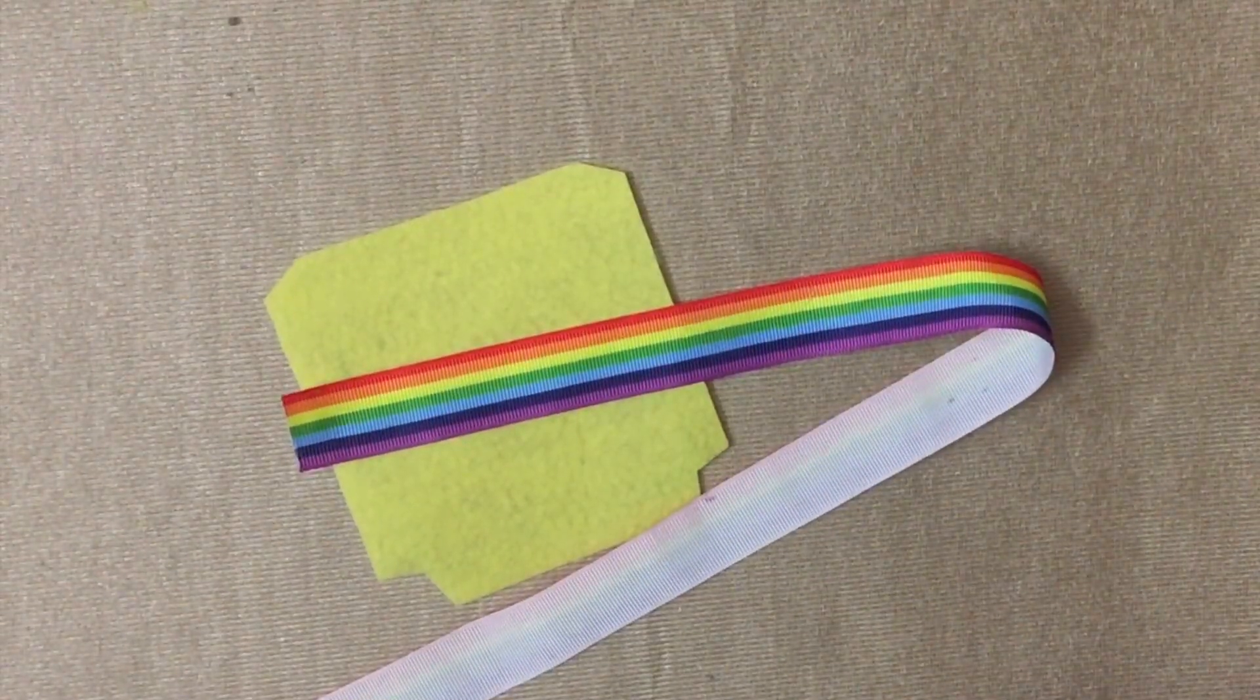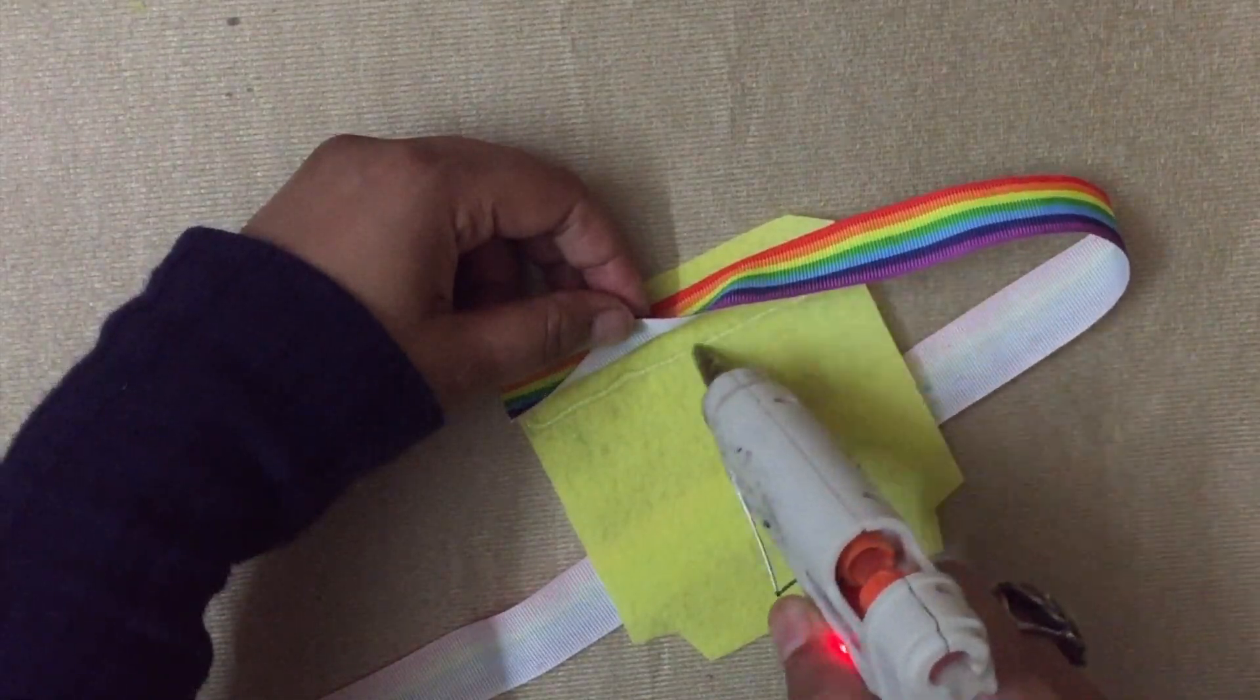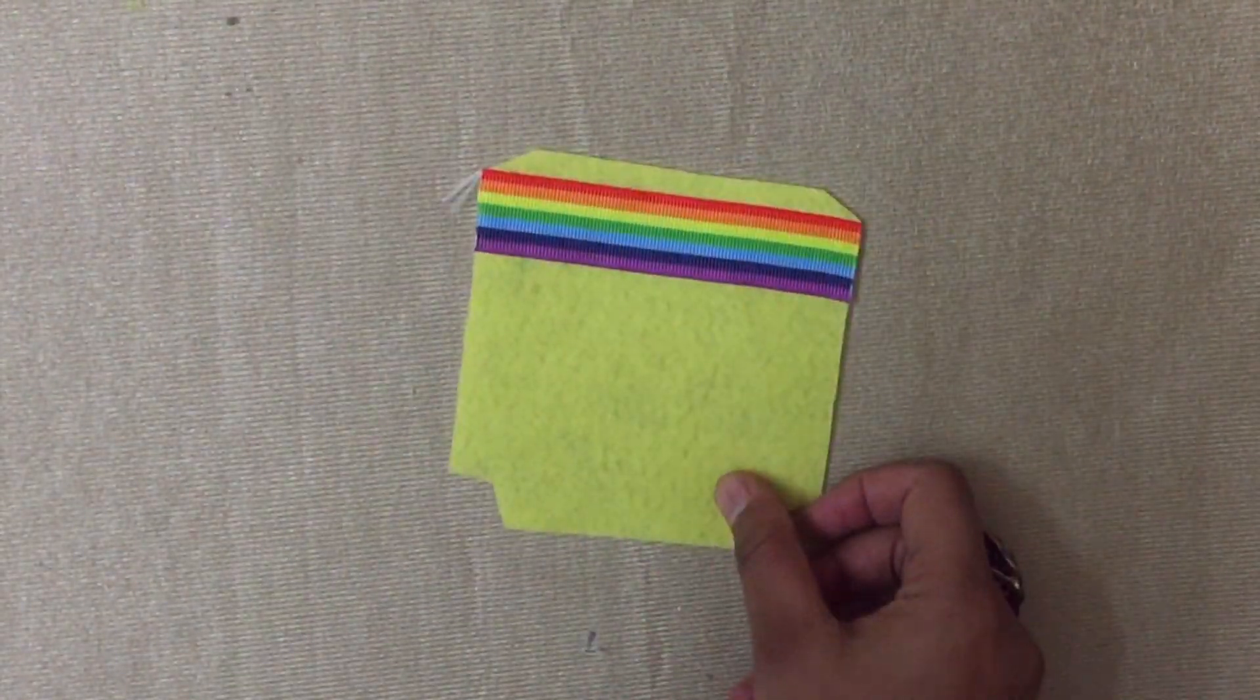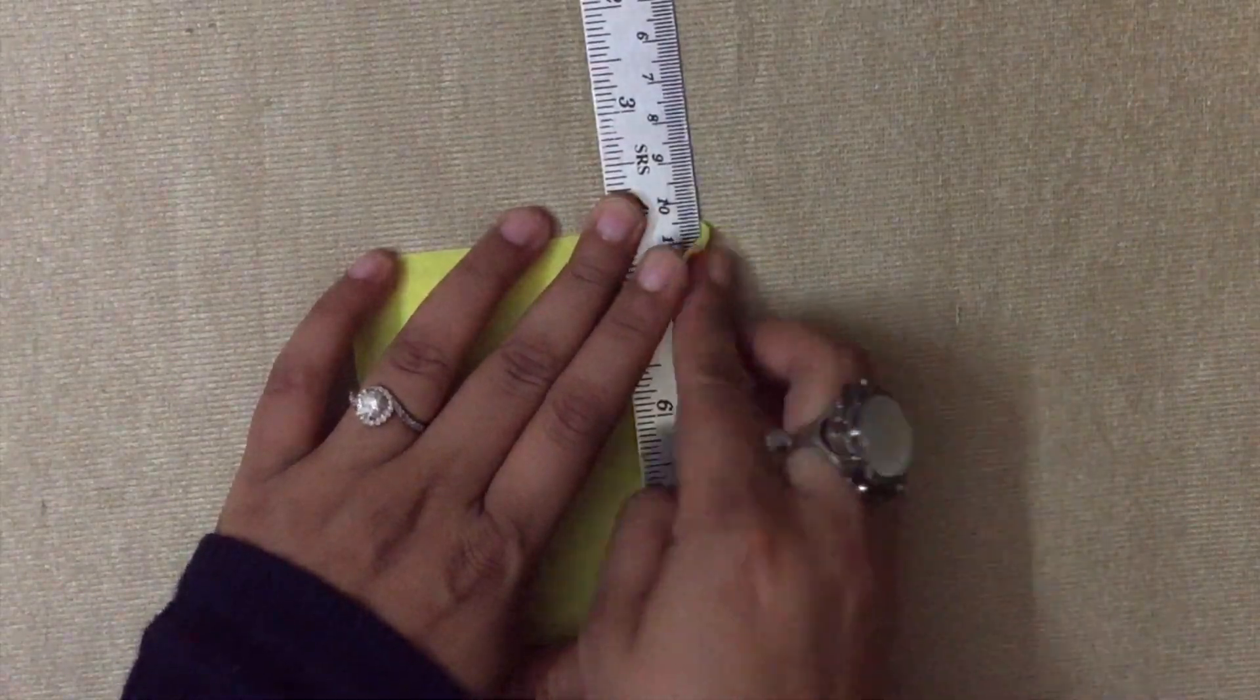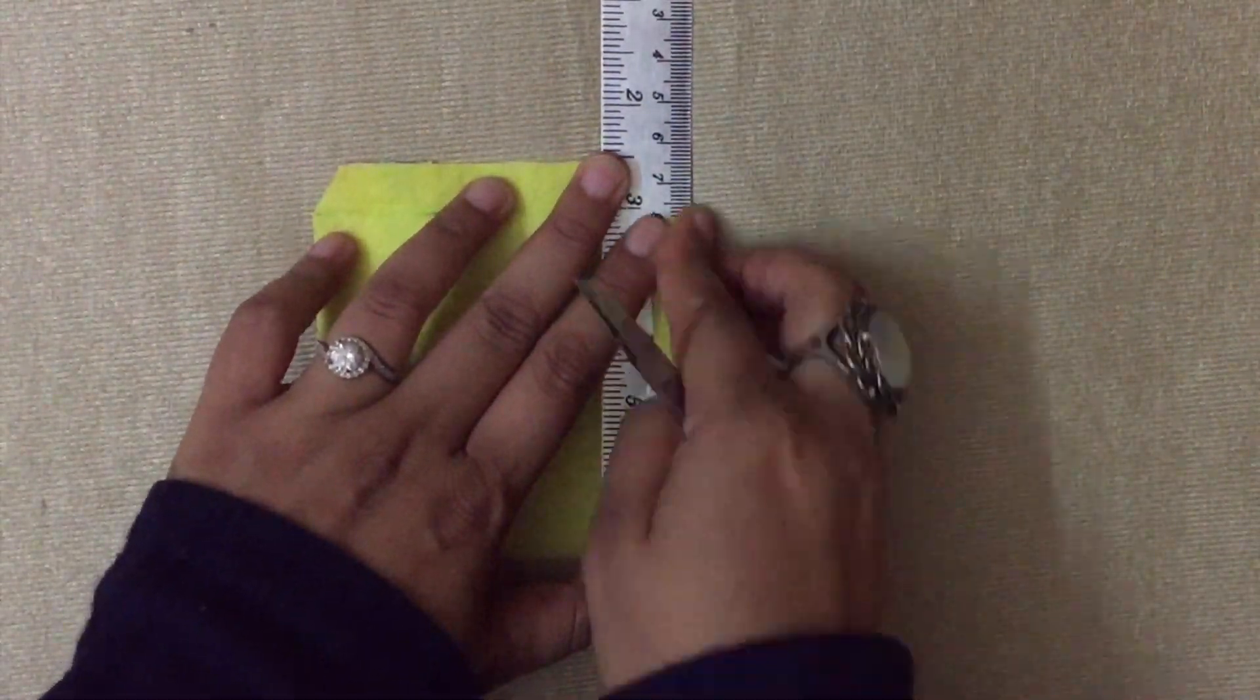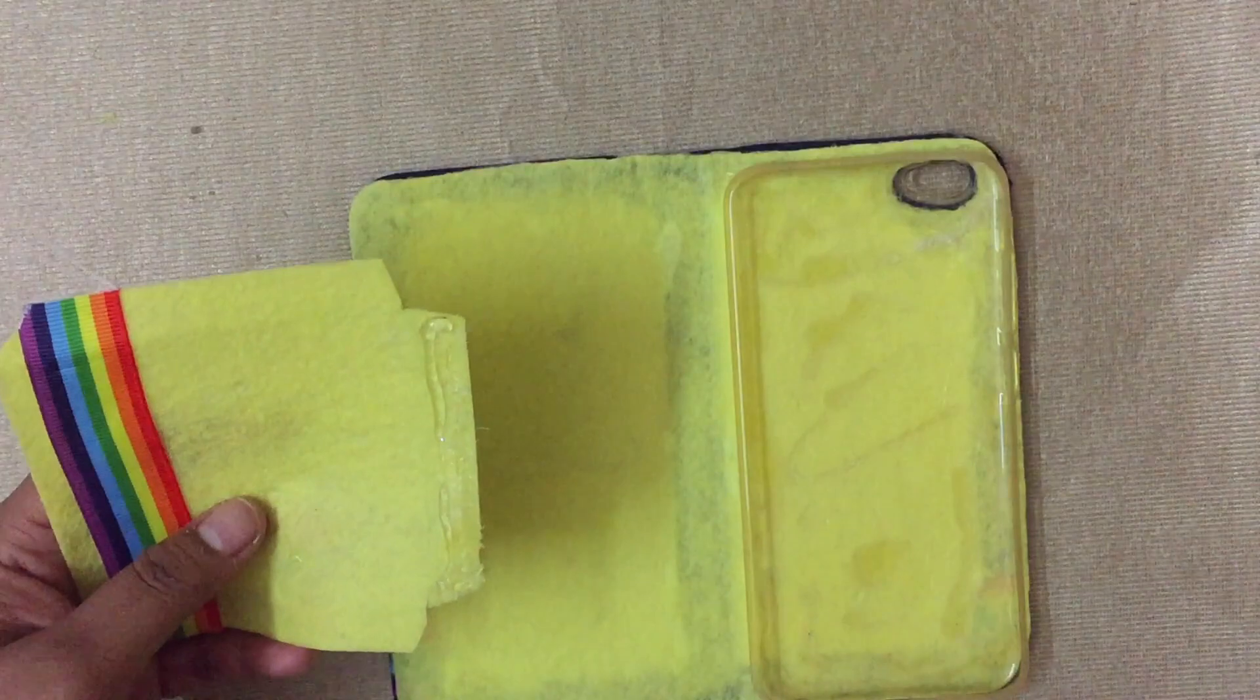Next, I'm just decorating the pockets with the ribbon as shown. With the blunt edge of a scissor, I'm going over the outline of the pocket like so and folding it over so that it forms a crease and is easier to glue.